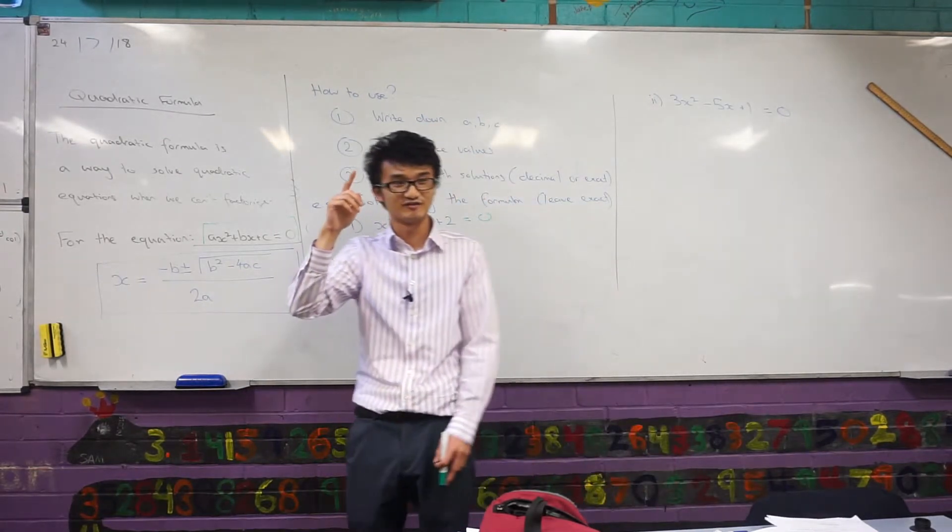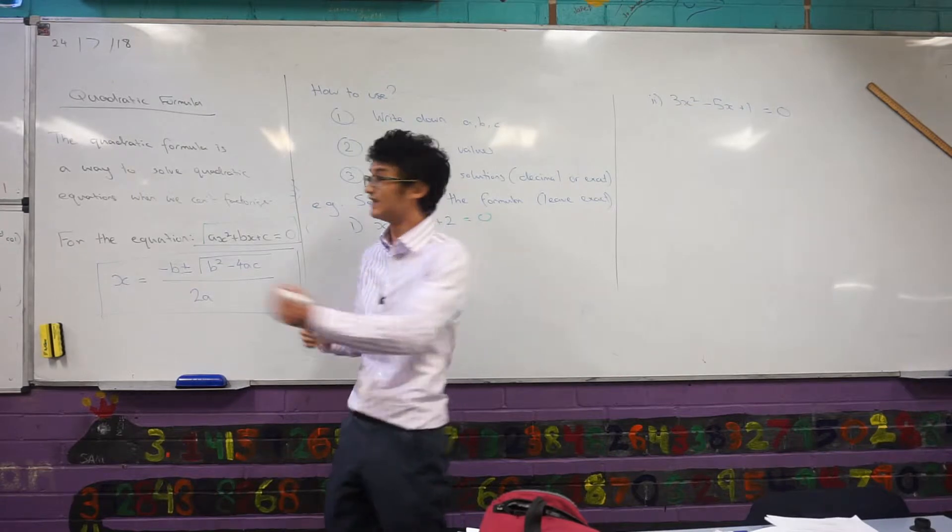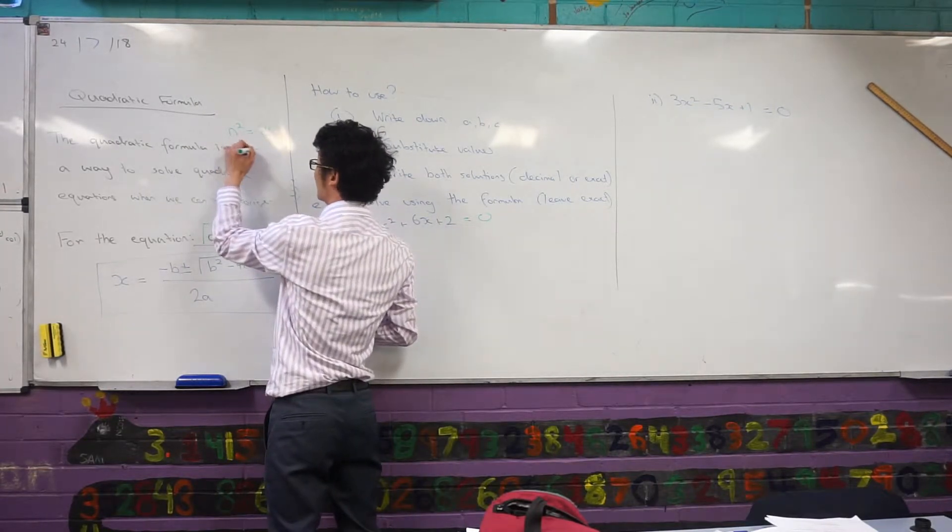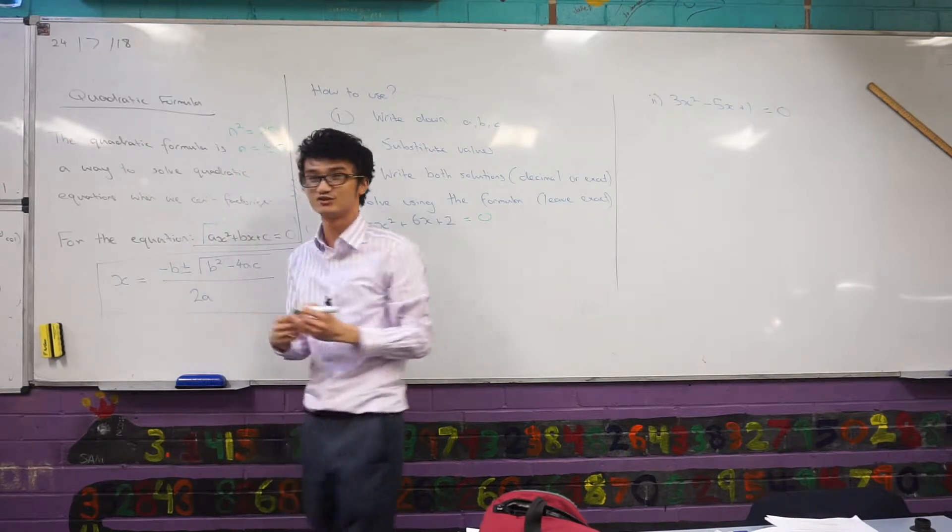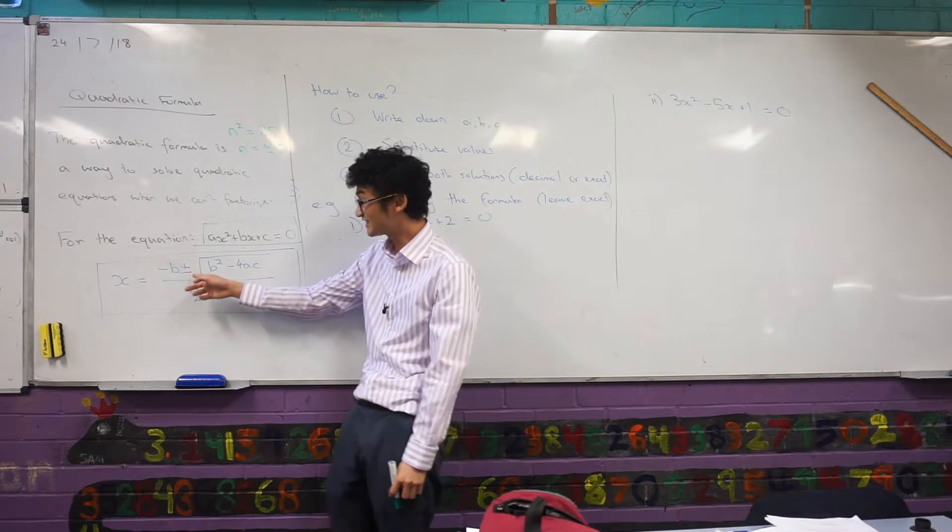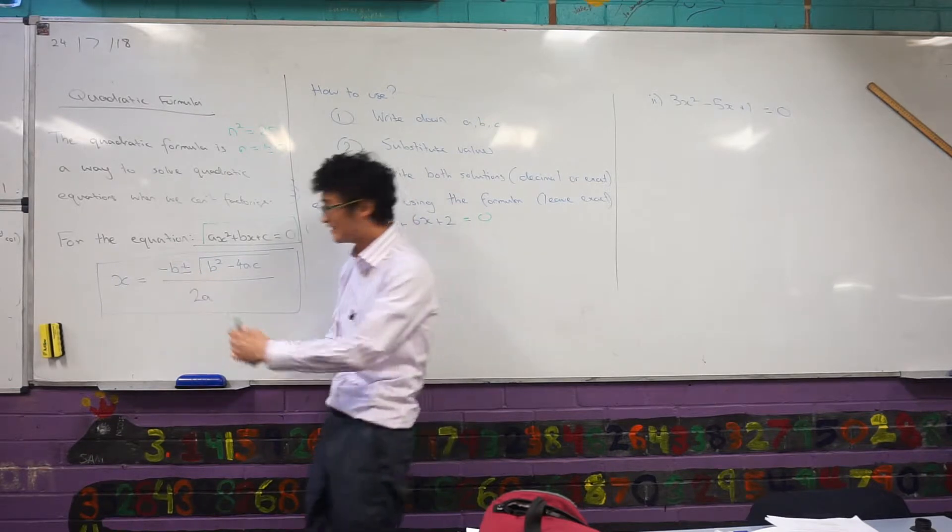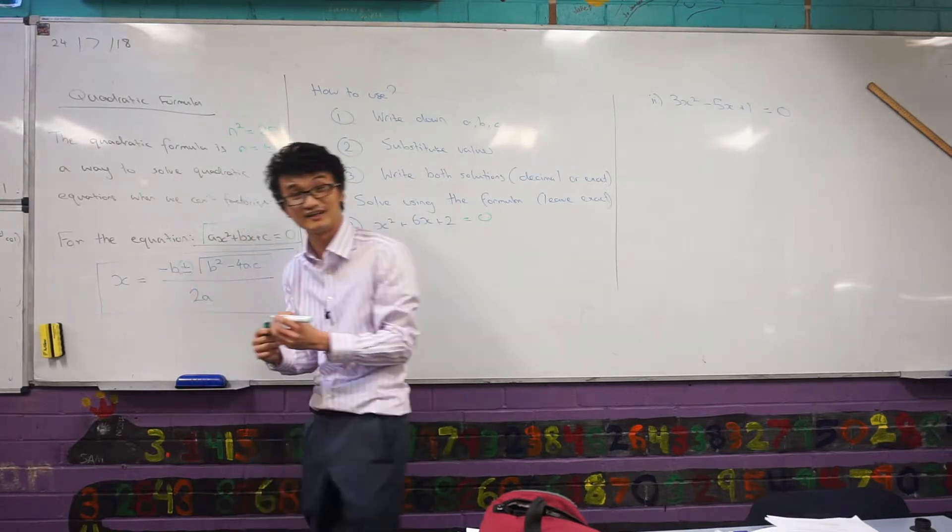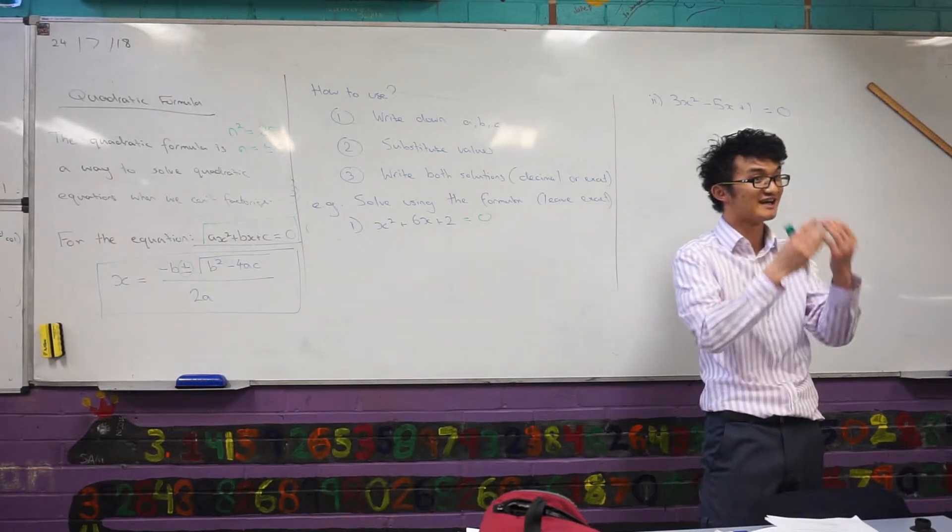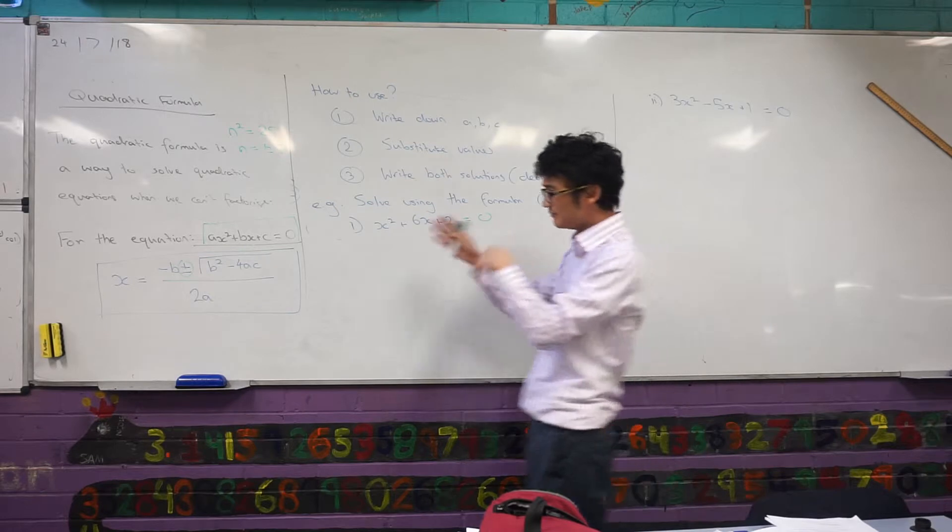When I say write both solutions, remember the first example I gave you was that n squared equals 25. Well then I've got two solutions here, n can equal plus or minus 5. So when you go to your quadratic equation, that's already kind of inbuilt into it. Can you see that? We've got this plus or minus guy there, right? That's going to be the two solutions that I get. Let me show you how this works.